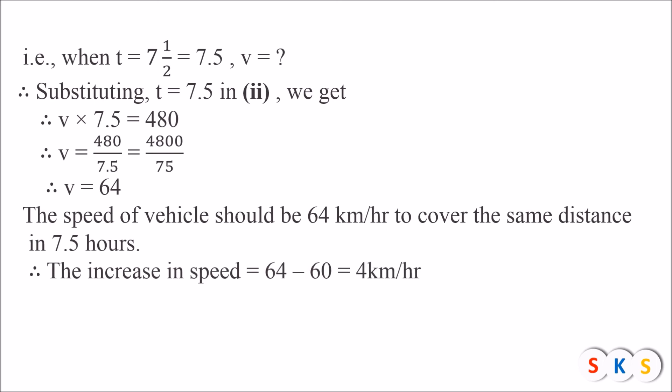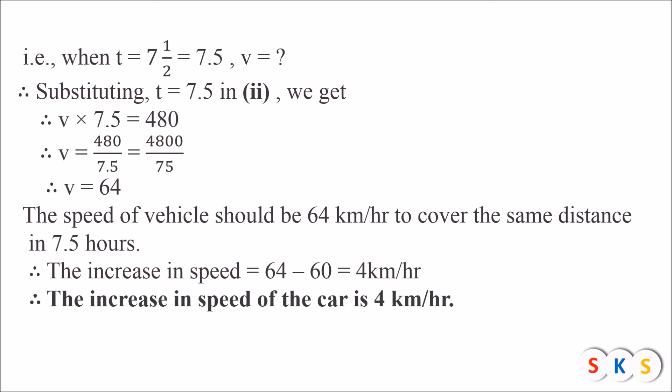The increase in speed is 64 − 60 = 4 km/h. It means the speed of the car has to be increased by 4 km/h for it to cover the same distance in 7.5 hours. So the increase in speed of the car is 4 km/h.